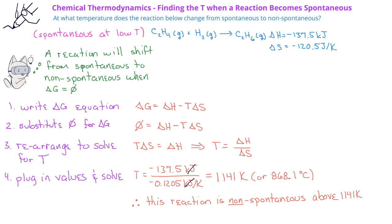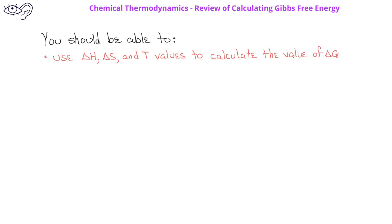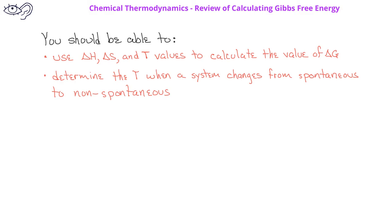After watching this video, you should be able to use the enthalpy change, entropy change, and temperature values to calculate the free energy change. In addition, for processes where the sign of ΔG is dependent on temperature, you should be able to calculate the temperature at which the sign switches from negative to positive.